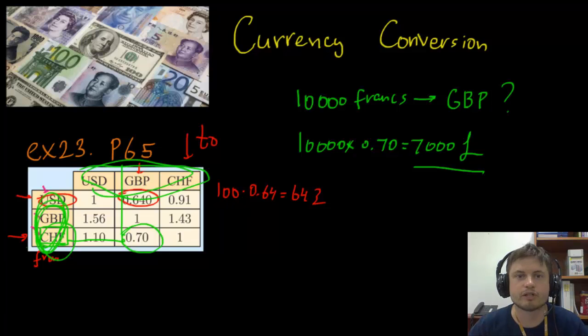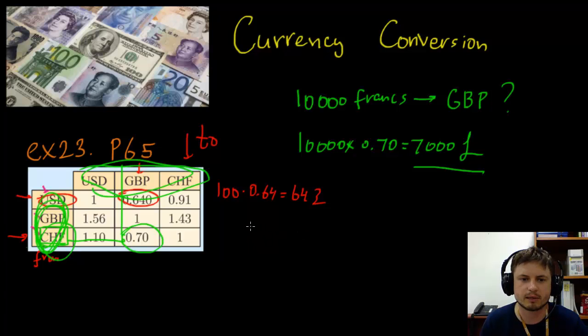Now another much easier way of doing this is of course using your GDC, your calculator. So let's try that with the GDC and basically come up with a function, which should be pretty easy because it's a linear function, for how to convert Swiss francs into British pounds. First, what we have to decide is what is going to be our X and what is going to be our Y. In this case, X is going to be francs and Y is going to be British pounds, GBP.